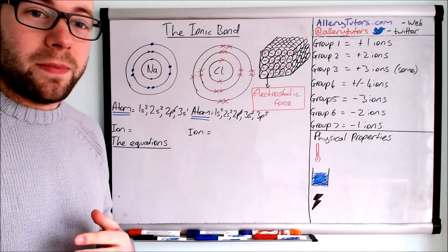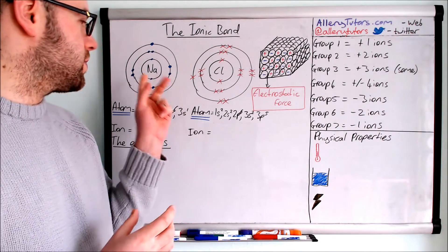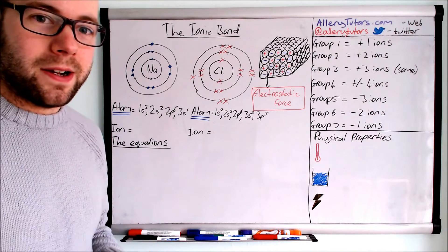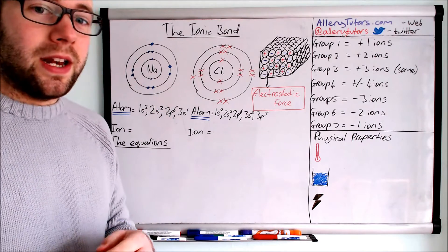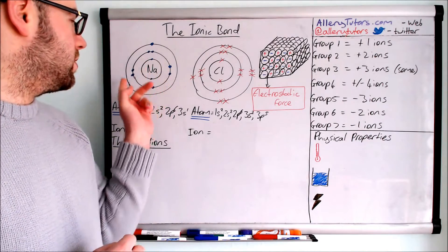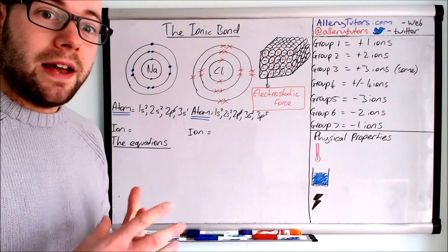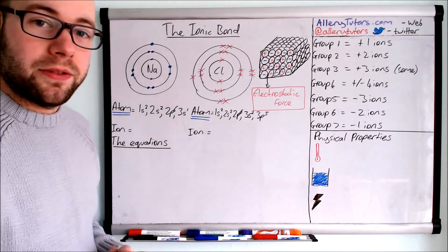So we're going to start by looking at the dot cross diagram of an ionic bond. You can see here that we've got two atoms: sodium and chlorine, which is a very common ionic compound. The sodium atom has the electron configuration of two electrons in the middle, eight in the next shell, and one in the outer shell. So it's in group one. The A level electron configuration is 1s2, 2s2, 2p6, 3s1.